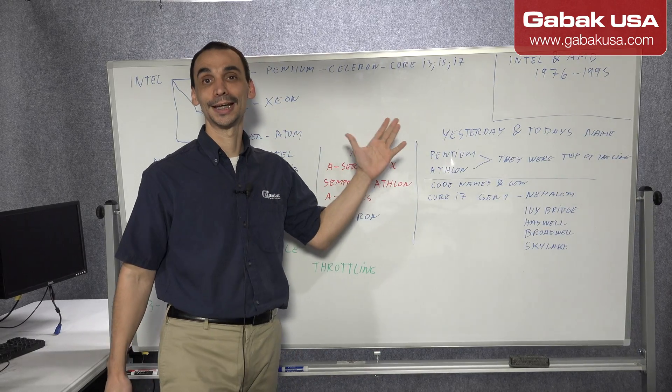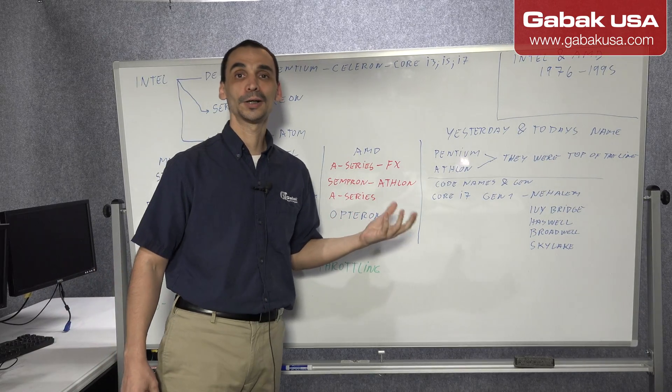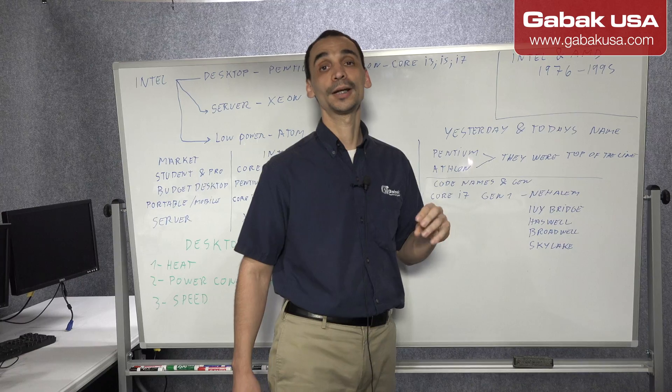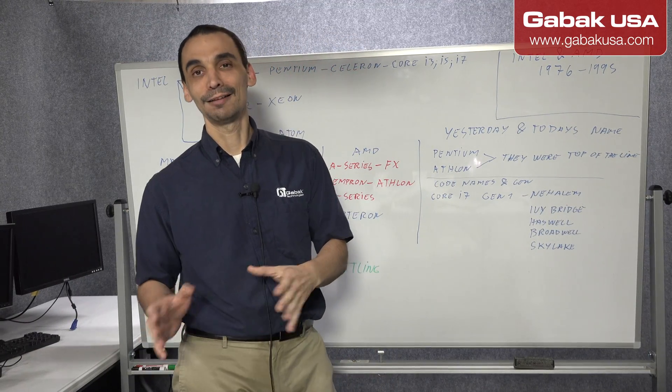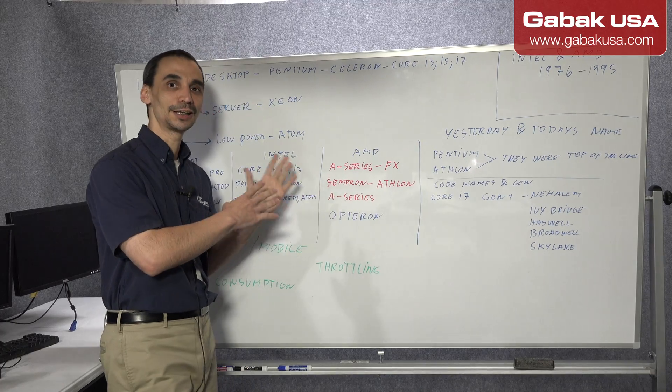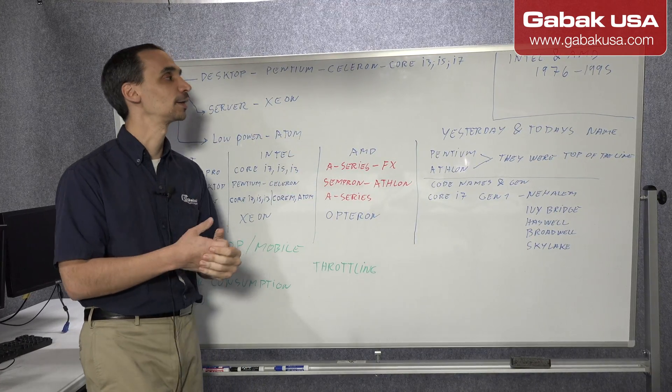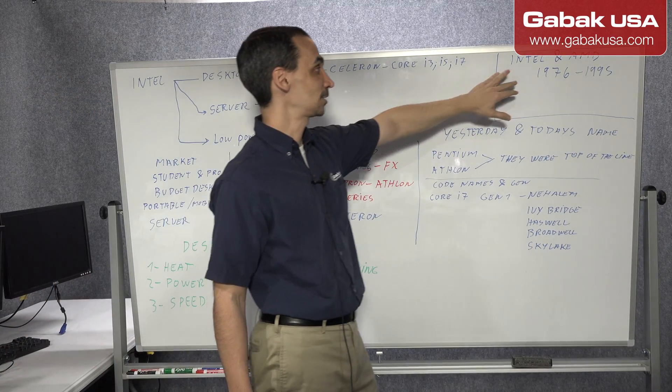So those are the major players, at least today, 2016. There is another one that is called ARM. ARM is of course for cell phones and tablets and other things. But basically now we are going to talk about this. Later on we are going to talk about the other brand as well. So in the beginning we are going to start with the story.